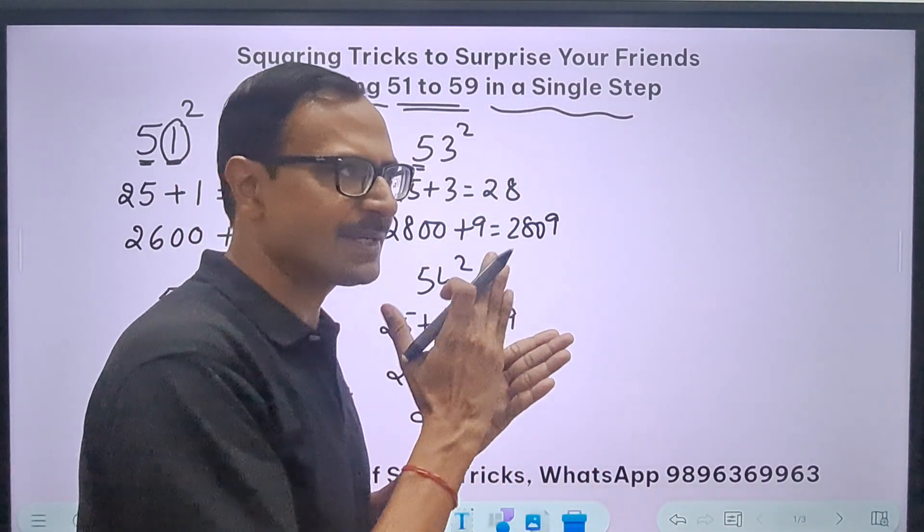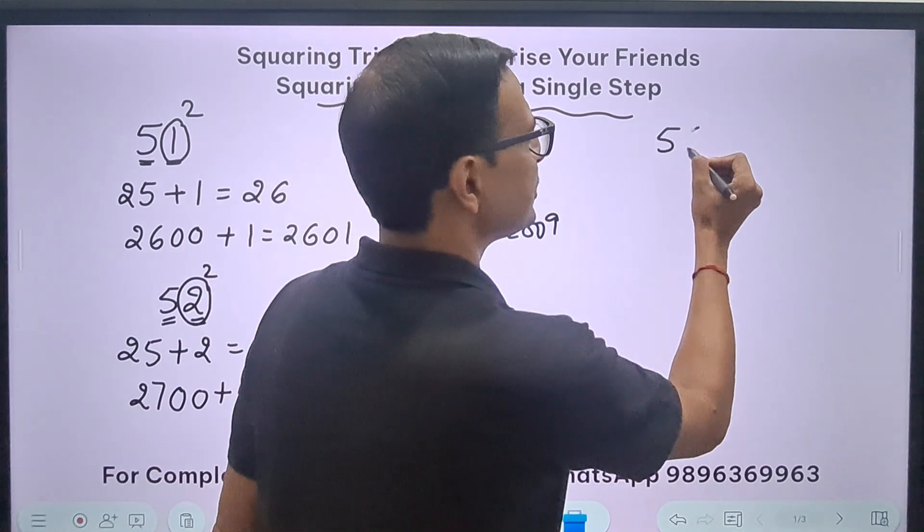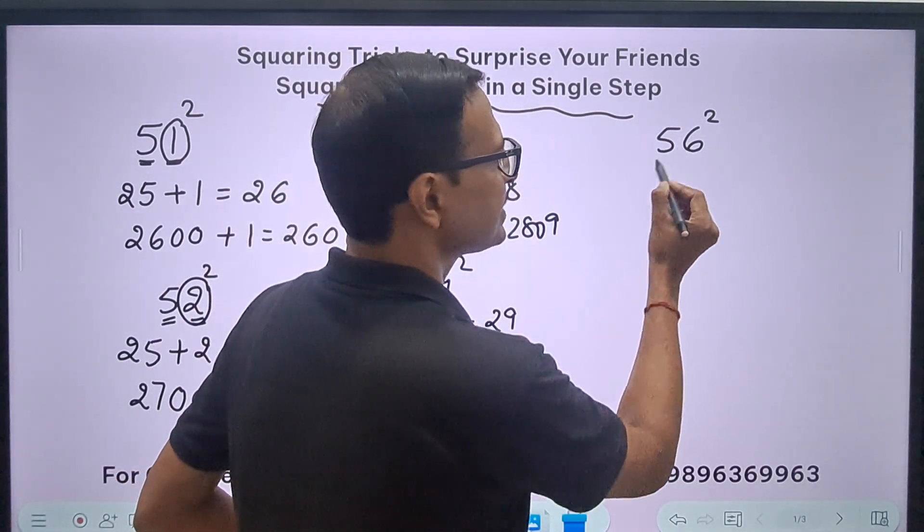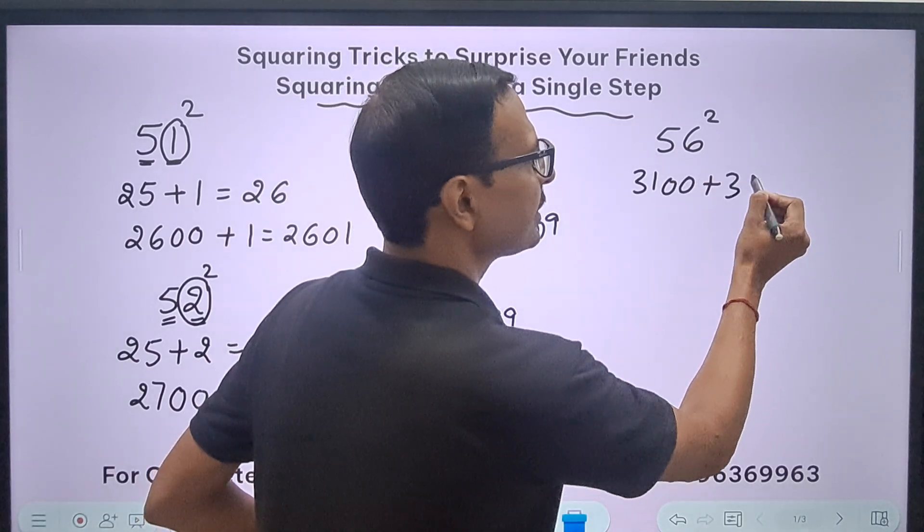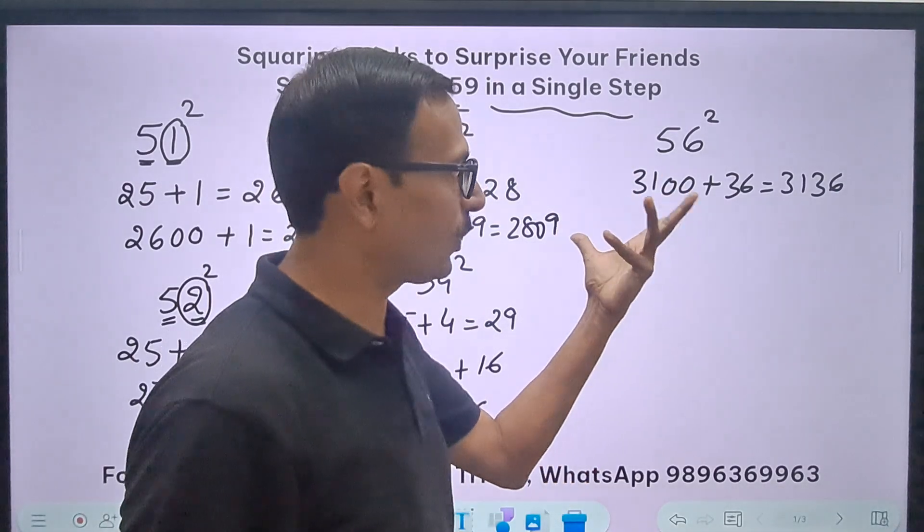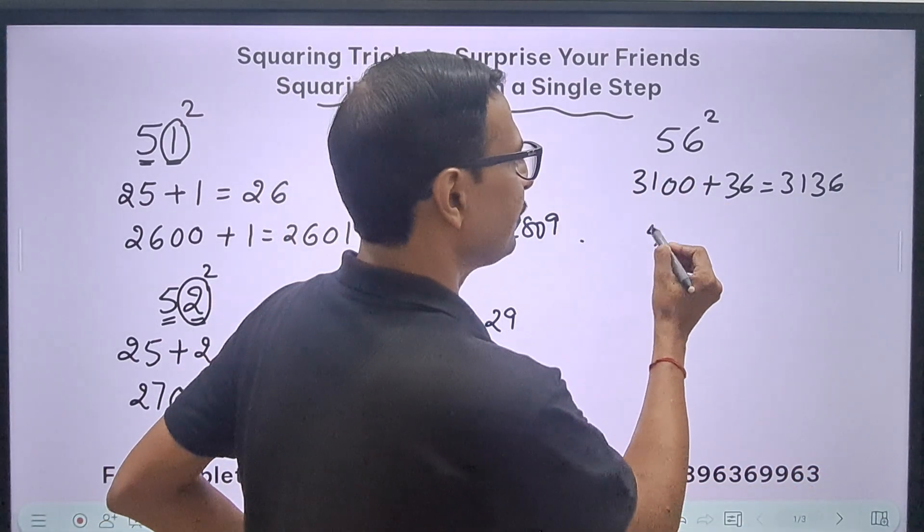Want to skip more steps? Watch: 55 is pretty easy, right? 5 times 6 is 30, so 3025. Now 56 square - I'll skip more steps. 25 plus 6 is 31, followed by two zeros, and add 6 square, 36. You get 3136. See, no more steps required, and you can actually do that mentally.